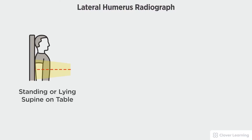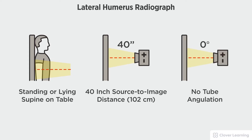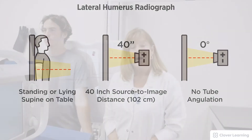In this view we will be demonstrating the lateral humerus. The lateral humerus should be performed with the patient standing at the upright bucky or lying supine on the radiographic table with a 40 inch source to image distance and no tube angulation.